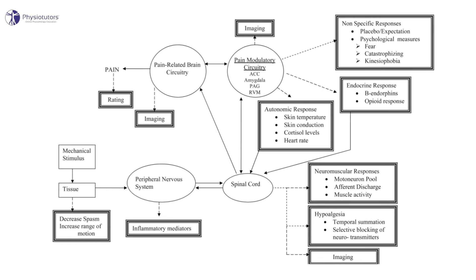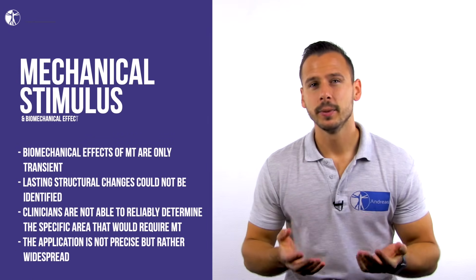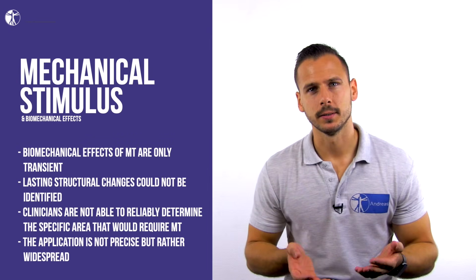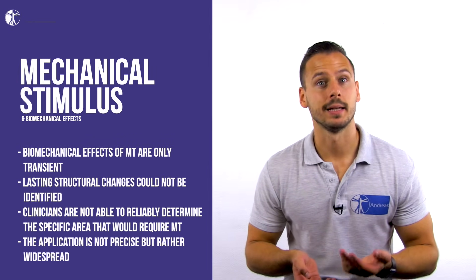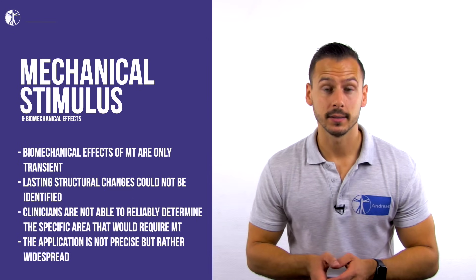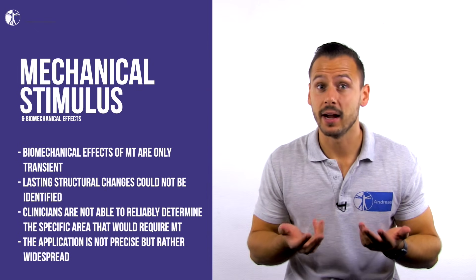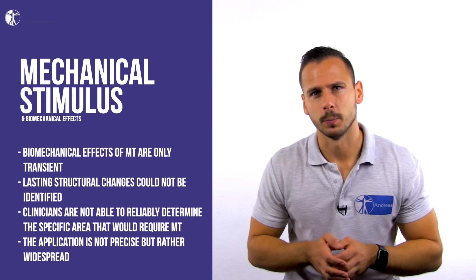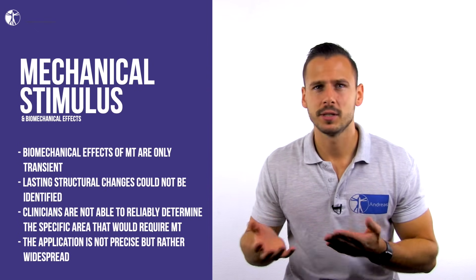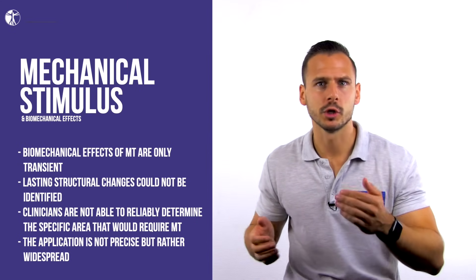Their comprehensive model of five mechanisms suggests that a mechanical input by means of manual therapy results in a multitude of neurophysiological effects, which we will briefly discuss in this video. Biomechanical effects of manual therapy have been reported, but these are only transient and lasting structural changes could not be identified. Furthermore, clinicians are not able to reliably determine the specific area that would require manual therapy, and the application is not precise but rather widespread, which supports the notion that additional mechanisms have to be at play.